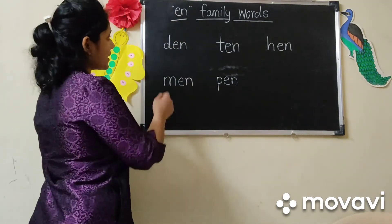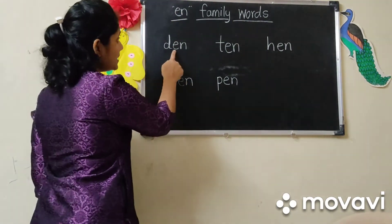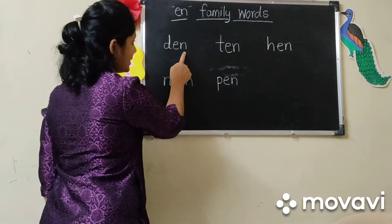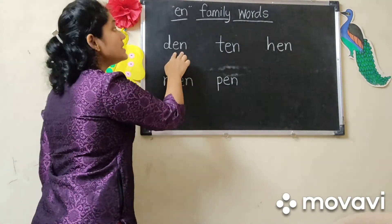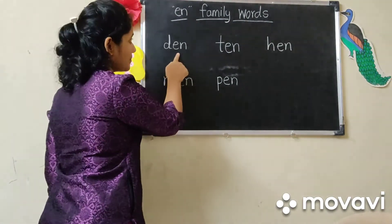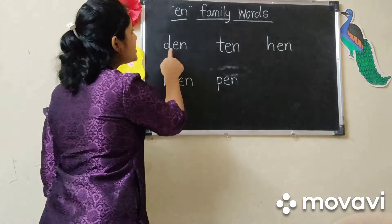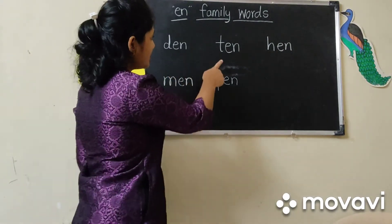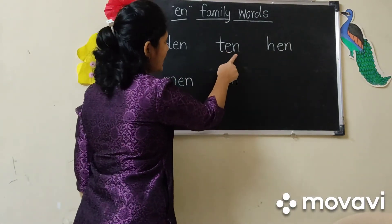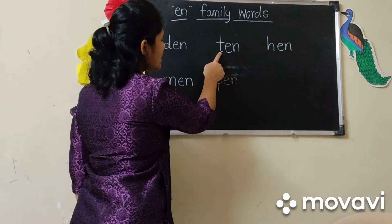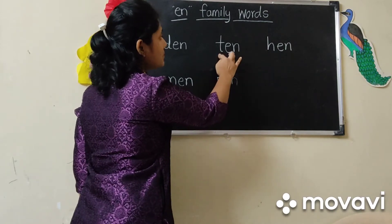So children, the first word is D, E, N — Den. Okay? Den. Next, T, E, N — Ten.